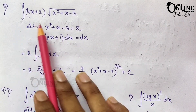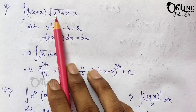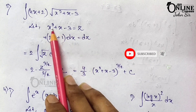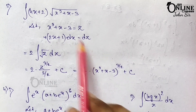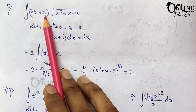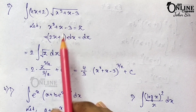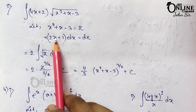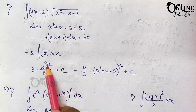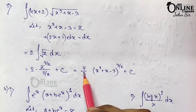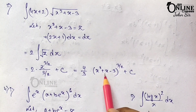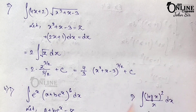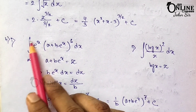Problem 2 (variant): ∫(4x + 2)√(x² + x − 3) dx. Let x² + x − 3 = z, then (2x + 1)dx = dz. Since 4x + 2 = 2(2x + 1), put 2 outside. The integral becomes 2∫√z dz = 2 · z^(3/2)/(3/2) + C = (4/3)(x² + x − 3)^(3/2) + C.